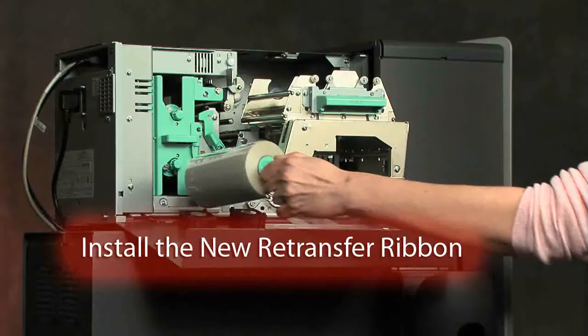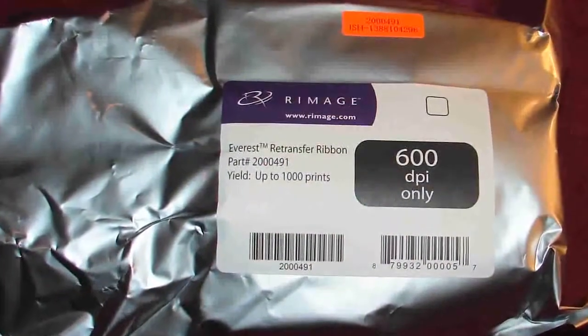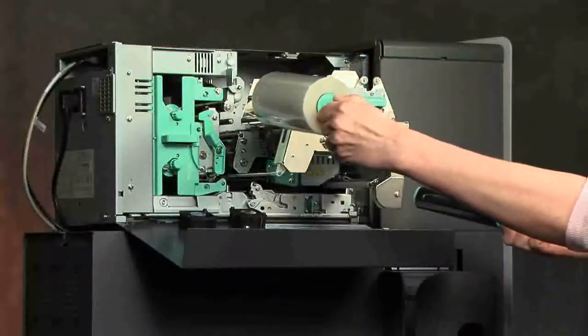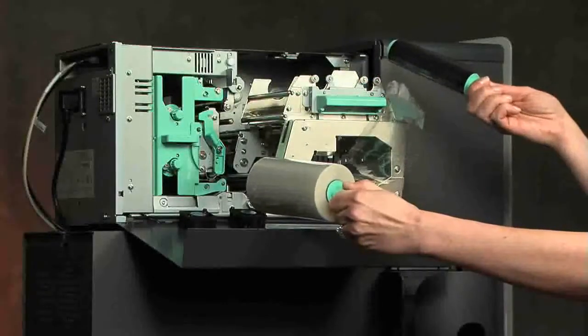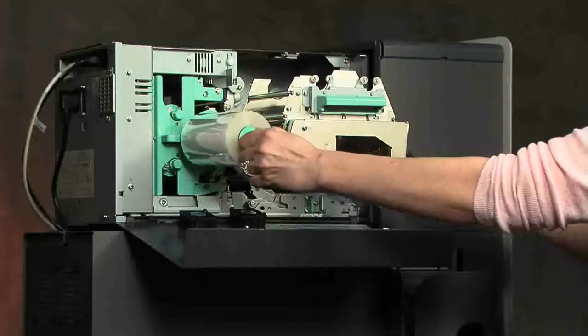Install the new retransfer ribbon. Remove the ribbon from the silver foil package marked Romage Everest 600 retransfer ribbon. Hold the larger supply roll in your left hand and the smaller take-up roll in your right hand. Carefully unwind a few inches of ribbon. Position the ribbon under the carrier.